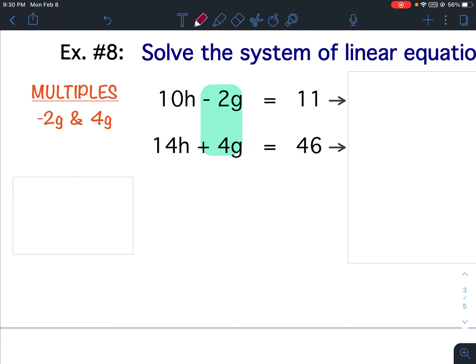Now remember, when you have multiples, you want to multiply the equation with the smaller term. Which is the smaller term? That's the 2g or the negative 2g. So that's the equation I'm going to multiply. What do I multiply by?